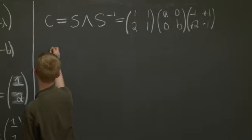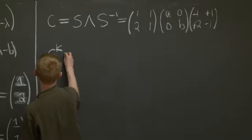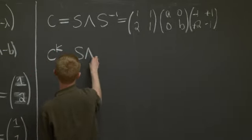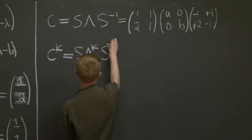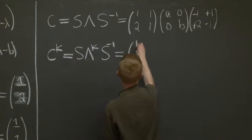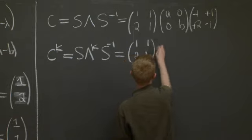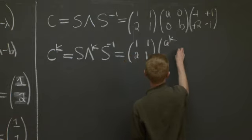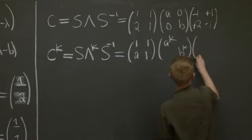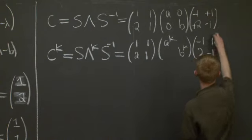Now how do we take powers of C? Well, C to the K is just S lambda to the K S inverse, right? 1, 1, 2, 1, A to the K, B to the K, negative 1, 1, 2, negative 1.